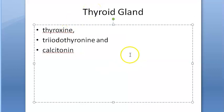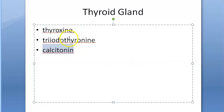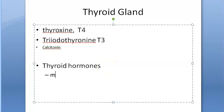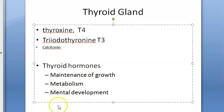The thyroid gland makes thyroxin, triiodothyronine, and calcitonin. Thyroxin and T3 come from follicular cells, while calcitonin is from parafollicular cells. T4 and T3 are the key hormones that help in maintenance of growth, metabolism, and mental development.